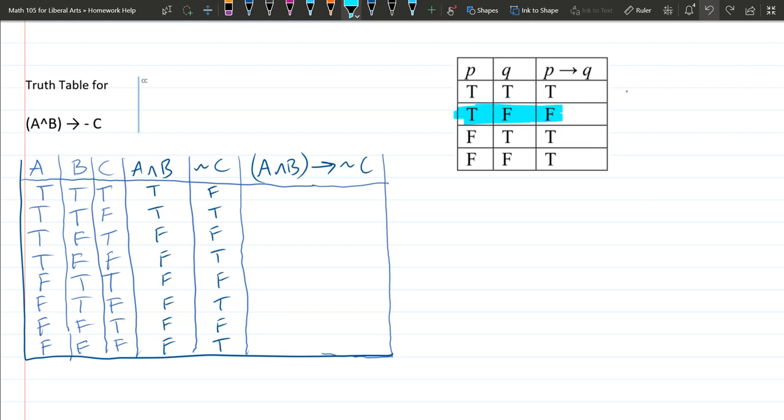So let's look for this pattern. I want to look for true and then false. Here's the P, here's the Q, and over here we have P implies Q. So I'm looking for true, false, which is very uncommon. It's only going to happen—true, false—it only happens right here.